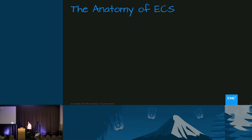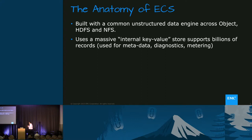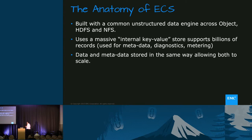A few things to know about the anatomy of ECS that makes it cutting edge. We've built it with a common unstructured engine that supports all the store services — HDFS and object. We've made sure that we do the key-value store inside ECS to be massive. Any object stores today suffer from metadata and data being stored separately and treated separately. In ECS, we have an internal key-value store that stores all metadata — user and system — stores diagnostics and metering, and we store the metadata and data in the same way, so it scales to billions of files.